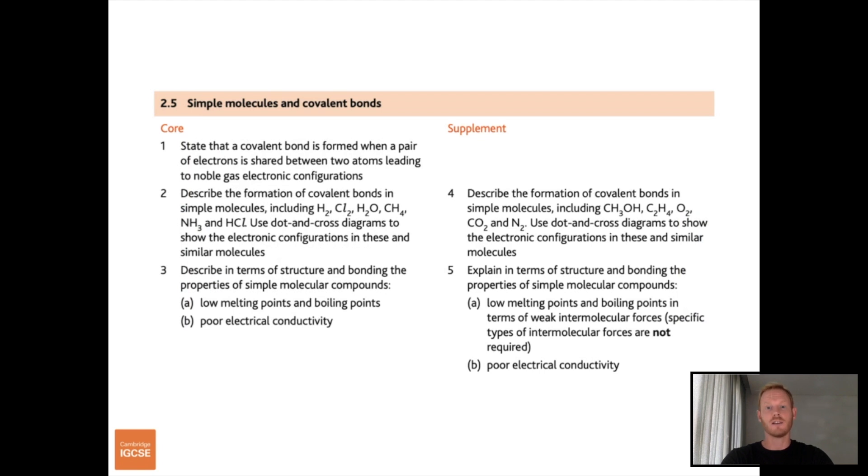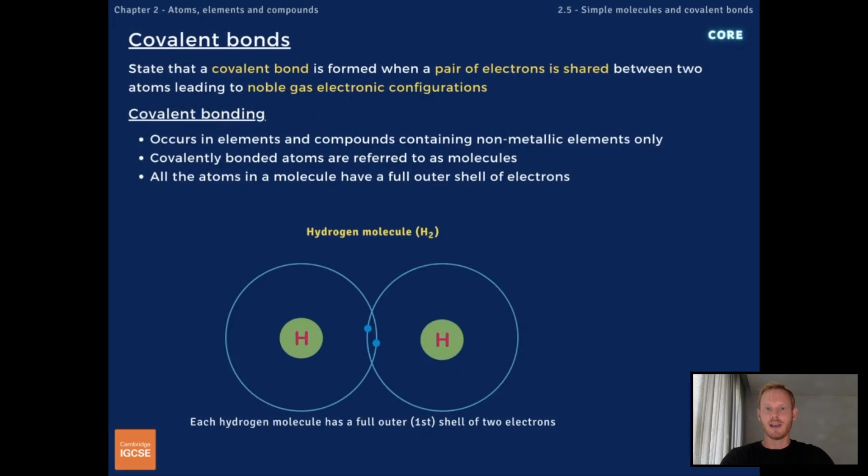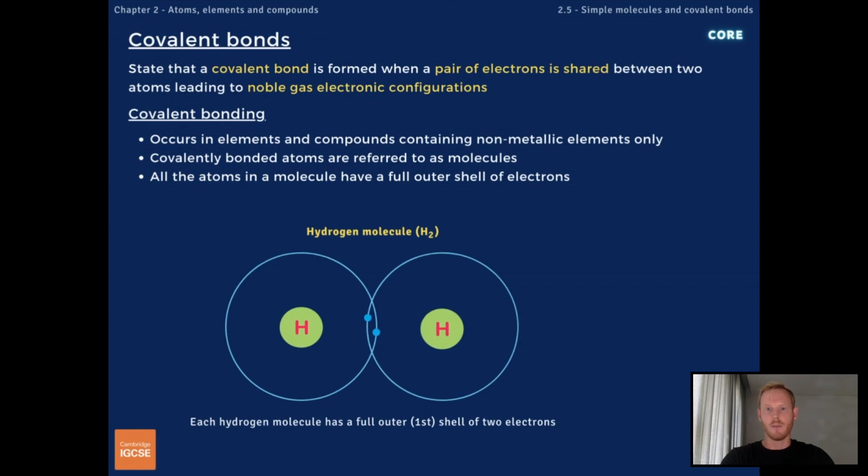Also, if you like the slides I use in my videos, they will eventually be available to download soon after I've finished producing all the videos. So, a covalent bond is formed when a pair of electrons is shared between two atoms. This leads to noble gas electronic configurations, meaning every bonded atom has a full outer shell of electrons.